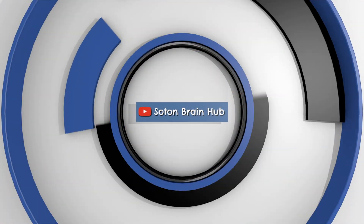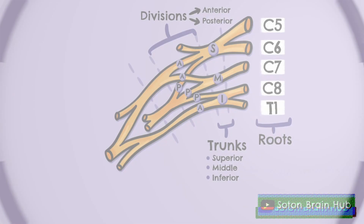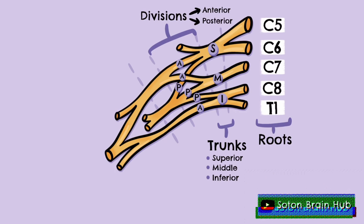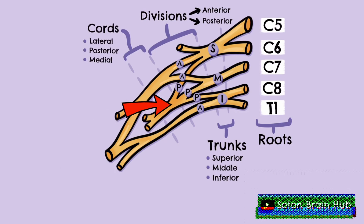The posterior divisions of the superior, middle and inferior trunks join together to form the posterior cord. The anterior division of the upper trunk and the anterior division of the middle trunk join together to form the lateral cord.